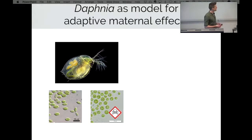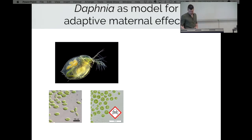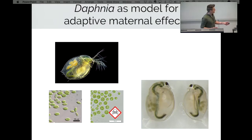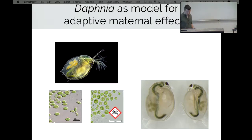The water flea is a perfect model for adaptive maternal effects. They are grazers — they eat algae, like green algae, but sometimes they also eat cyanobacteria, which can be very toxic and has a negative effect on their growth. These are two genetically identical sisters born on the same day, and you can see one is much larger than the other because it was exposed to the toxic cyanobacteria — it also has many more eggs. That's all caused by the toxic effects.